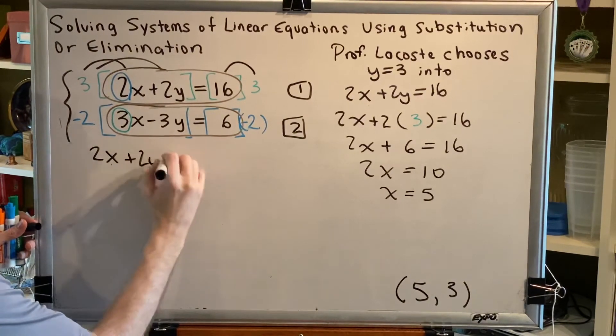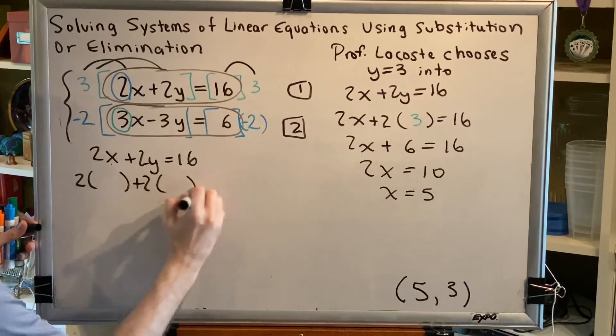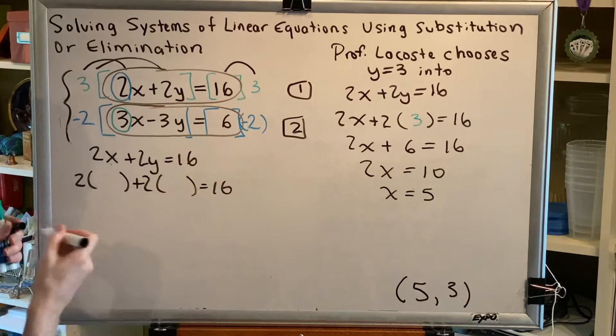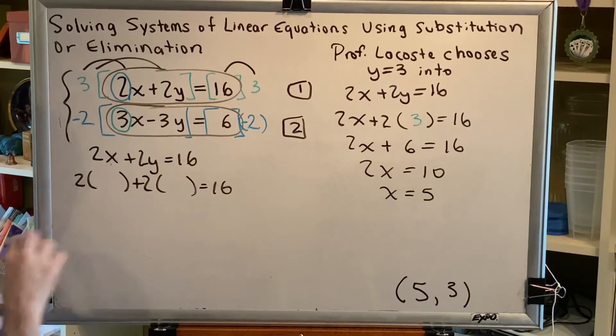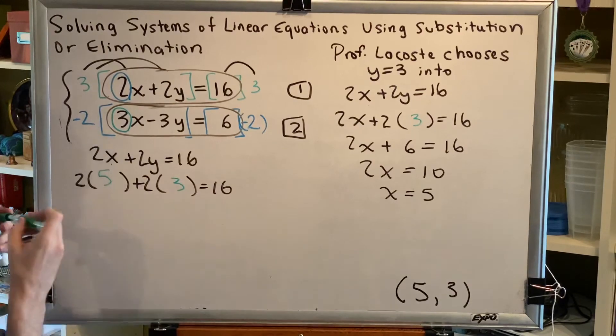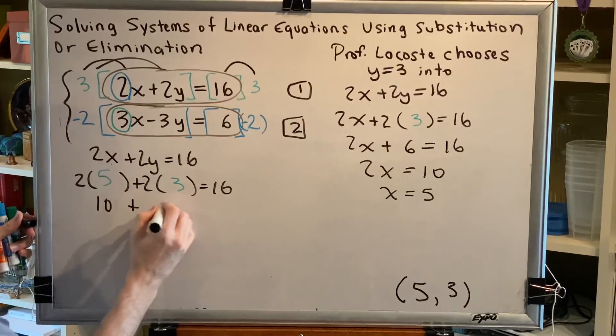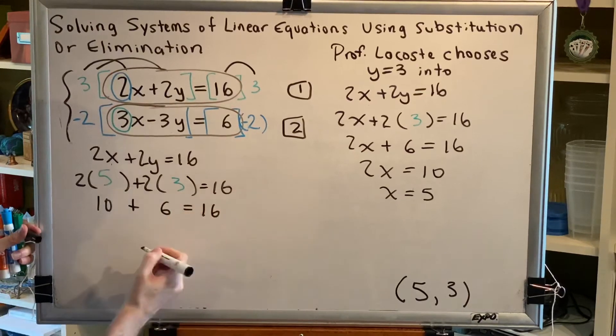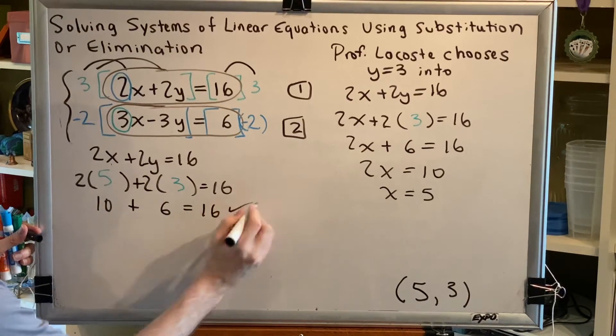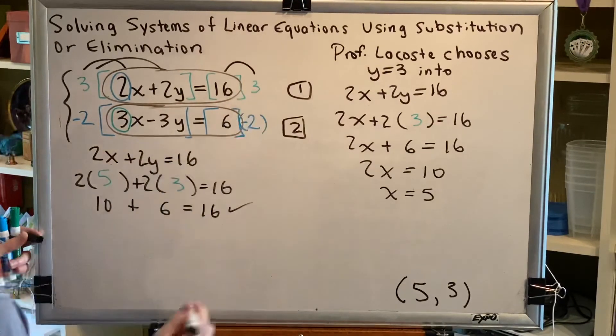2x plus 2y equals 16. So we get 2 times the value of x plus 2 times the value of y equals 16. The value of x is 5. The value of y is 3. And so we get 2 times 5, 10, plus 2 times 3, 6 equals 16. Does 10 plus 6 equals 16? Yes, it does. So this point satisfies the first equation.